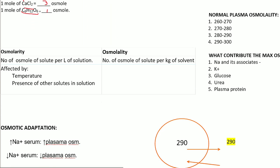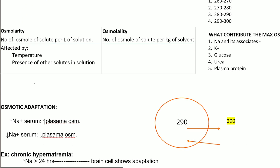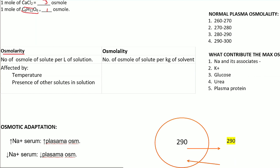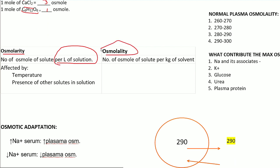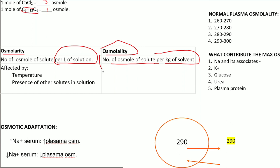The next topic is the difference between osmolarity and osmolality. Osmolarity is the number of osmols of solute per liter of solution, while osmolality is the number of osmols of solute per kilogram of solvent. Osmolality is considered the better measure because it is not affected by temperature or the presence of other solutes.